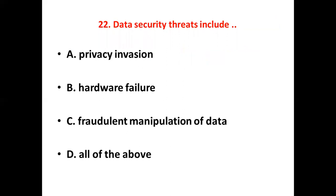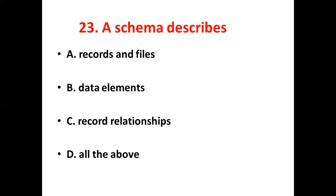23rd bit: Schema describes dash. Option A, Records and files. Option B, Data elements. Option C, Record relationships. Option D, All of the above. The answer is Option D, All of the above.